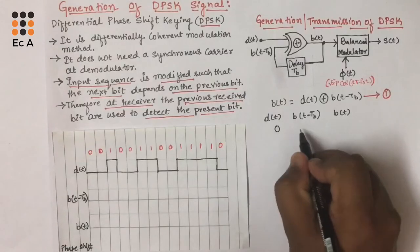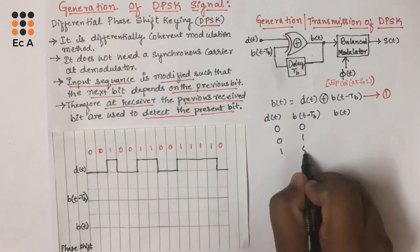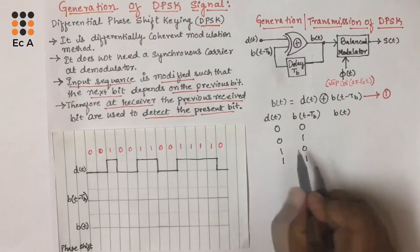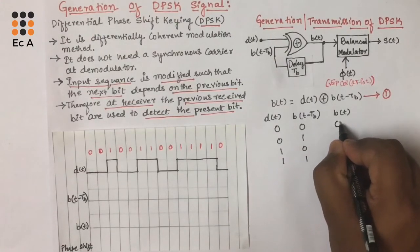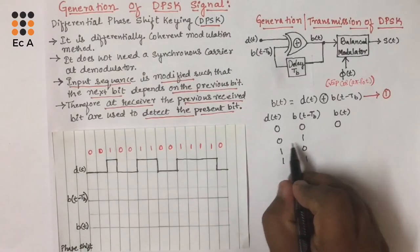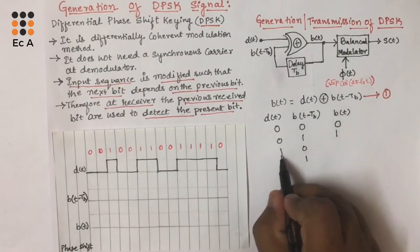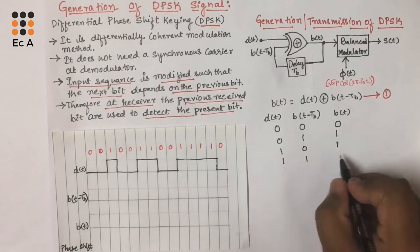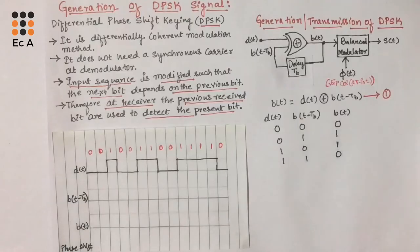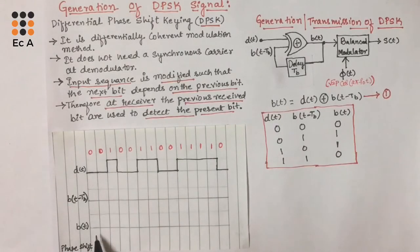Since we have two inputs, four combinations will be there: 0,0 — 0,1 — 1,0 — and 1,1. For the XOR gate: if input is 0,0 output is 0; if input is 0,1 output is 1; if input is 1,0 output is 1; and if input is 1,1 output is 0. Based on this table, let us see how the sequence B(t) is generated.